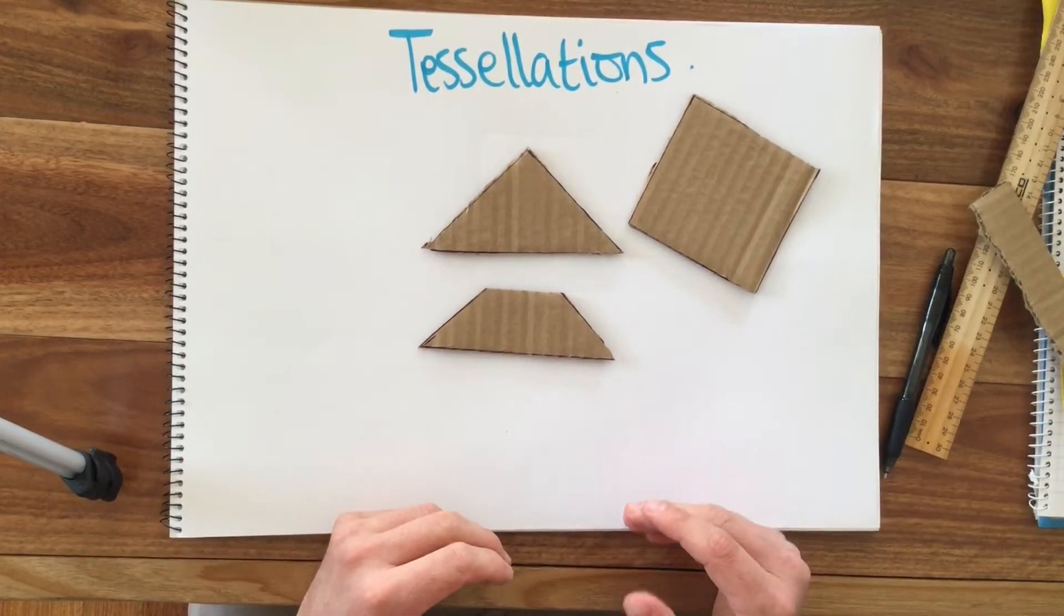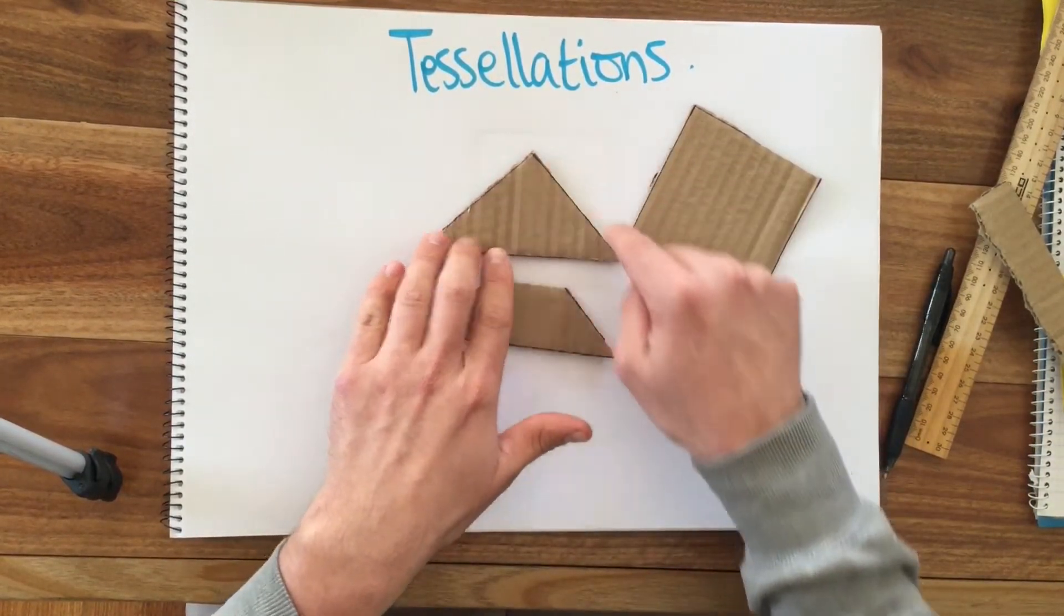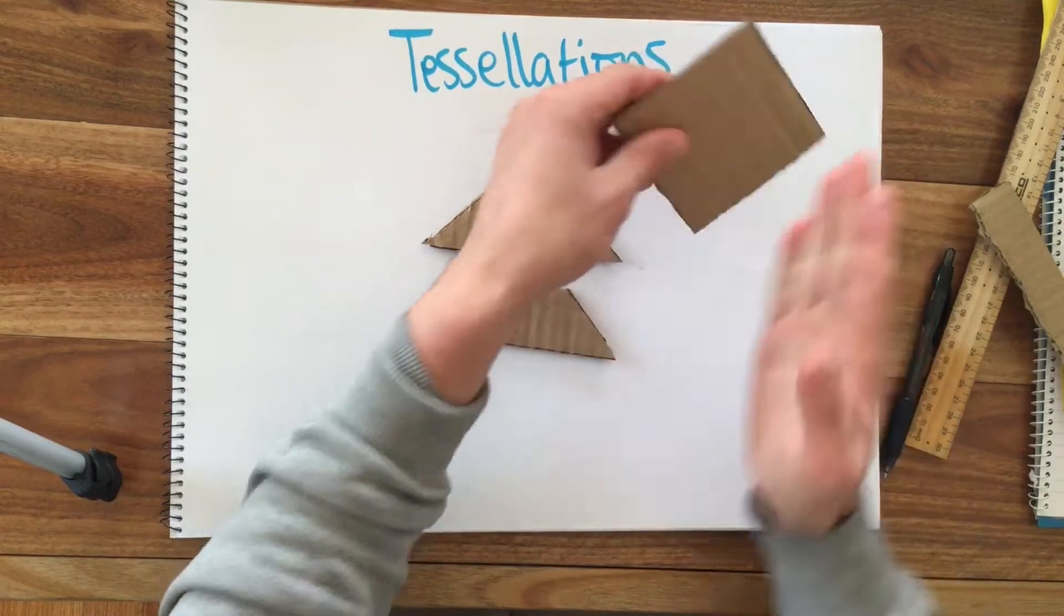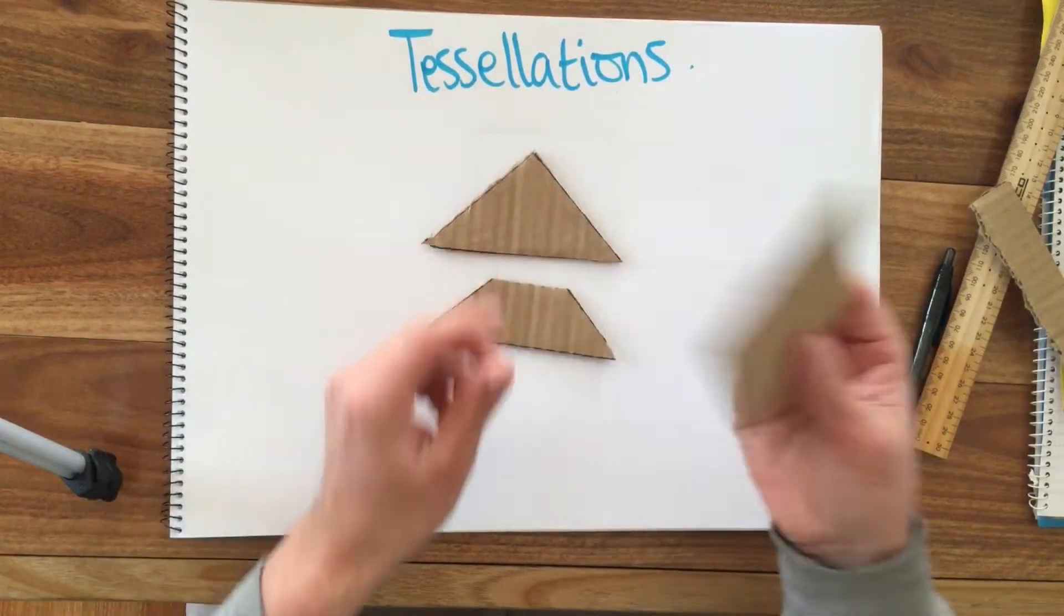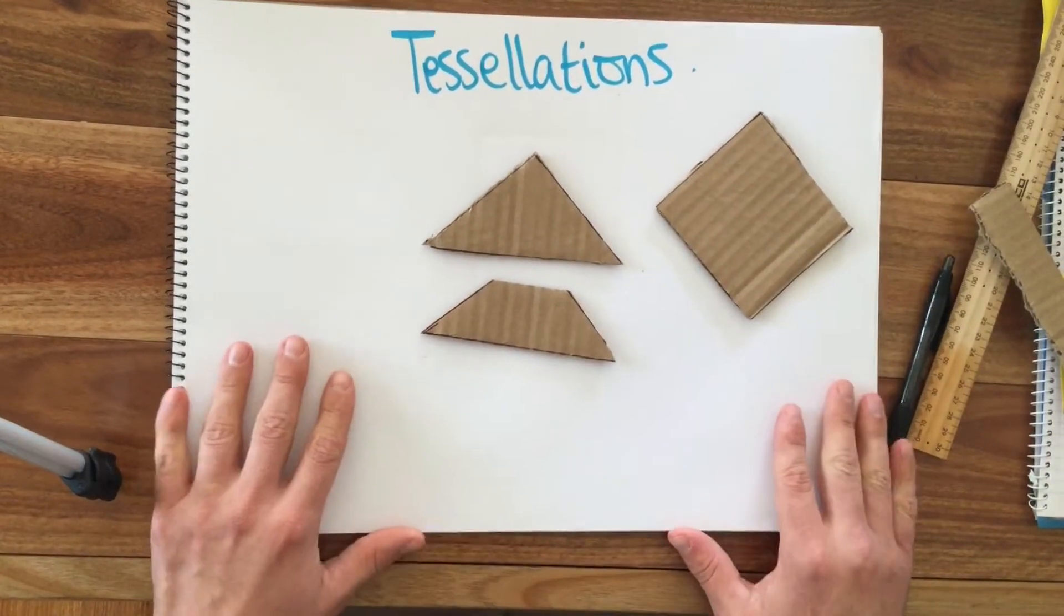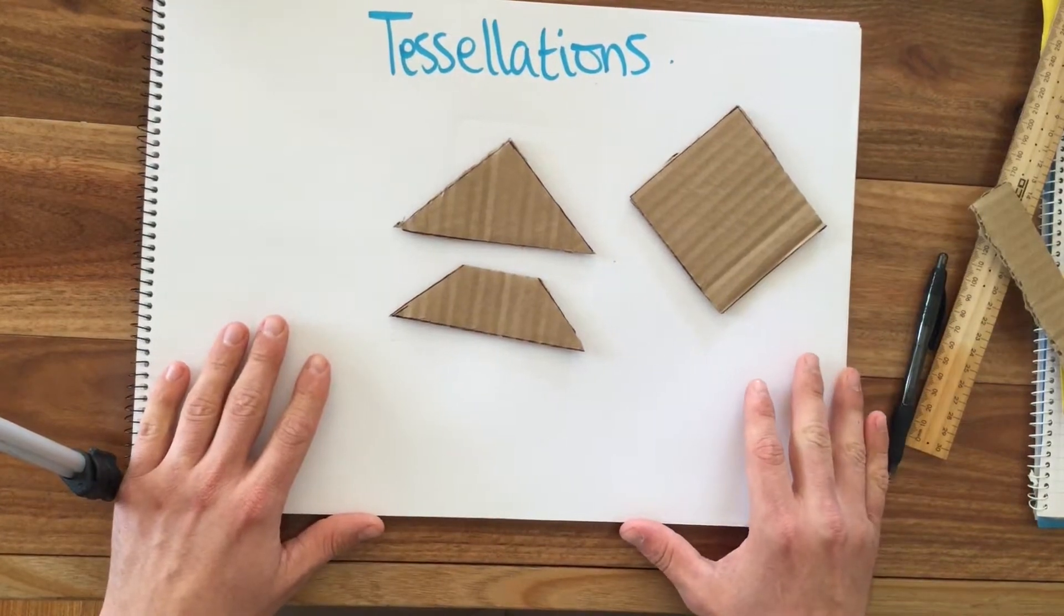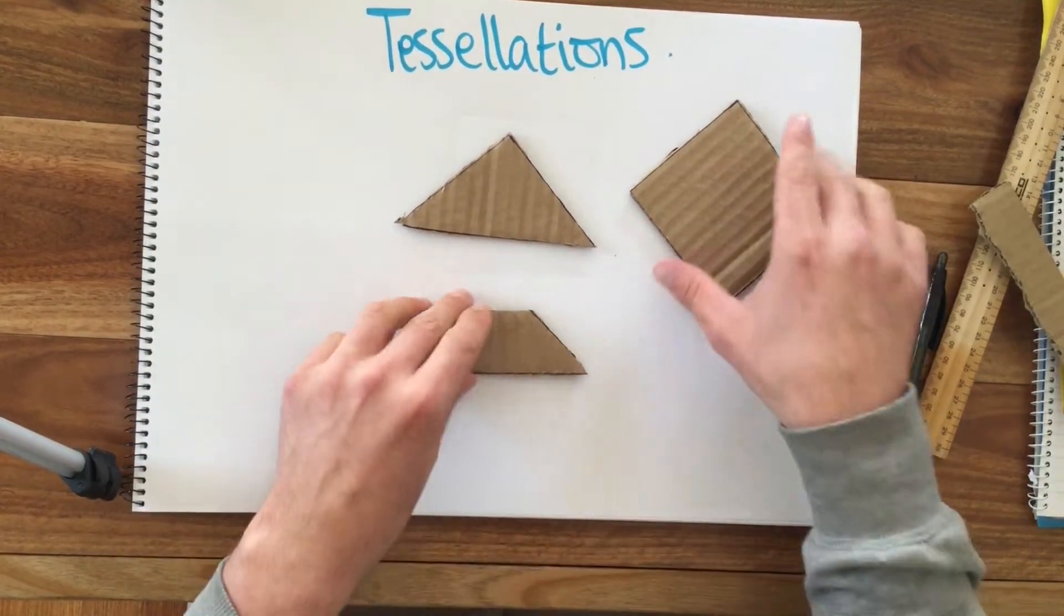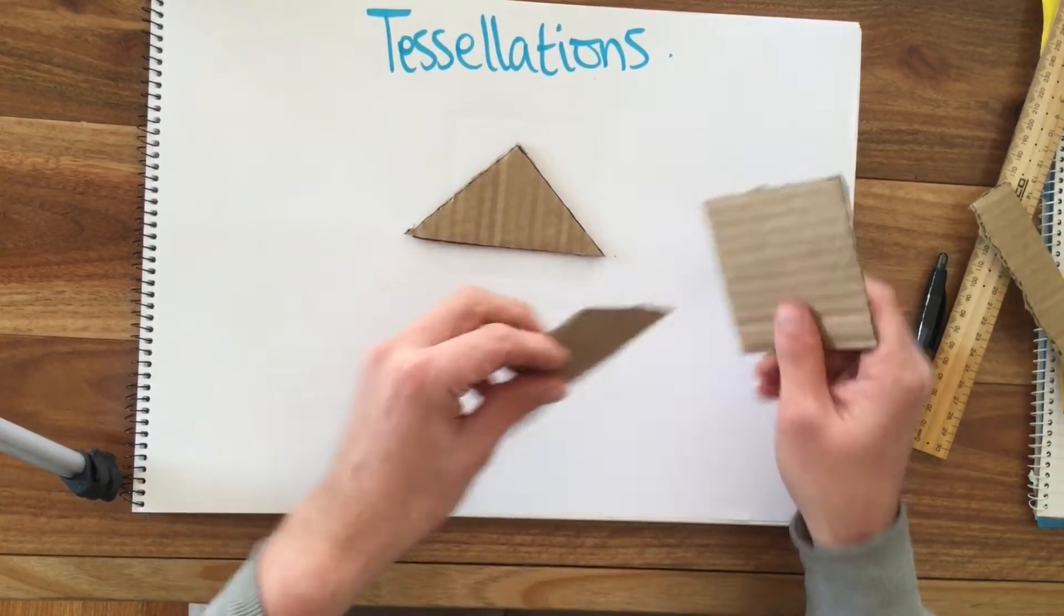Now before, I didn't have to make this triangle - I could have cut my square in half and I would have had two triangles there. There's lots of different ways you can make shapes. Be creative today.